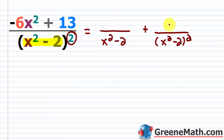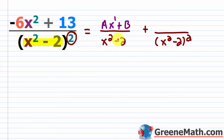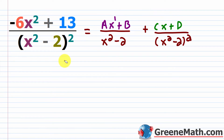Now, what's going to go in the numerator? Remember, if you have a quadratic in the denominator — something to the second power — then you want something to the first power in your numerator. So I'm going to put ax plus b over the first factor, and cx plus d over the second. You want one degree less in the numerator. So this is the basic setup.